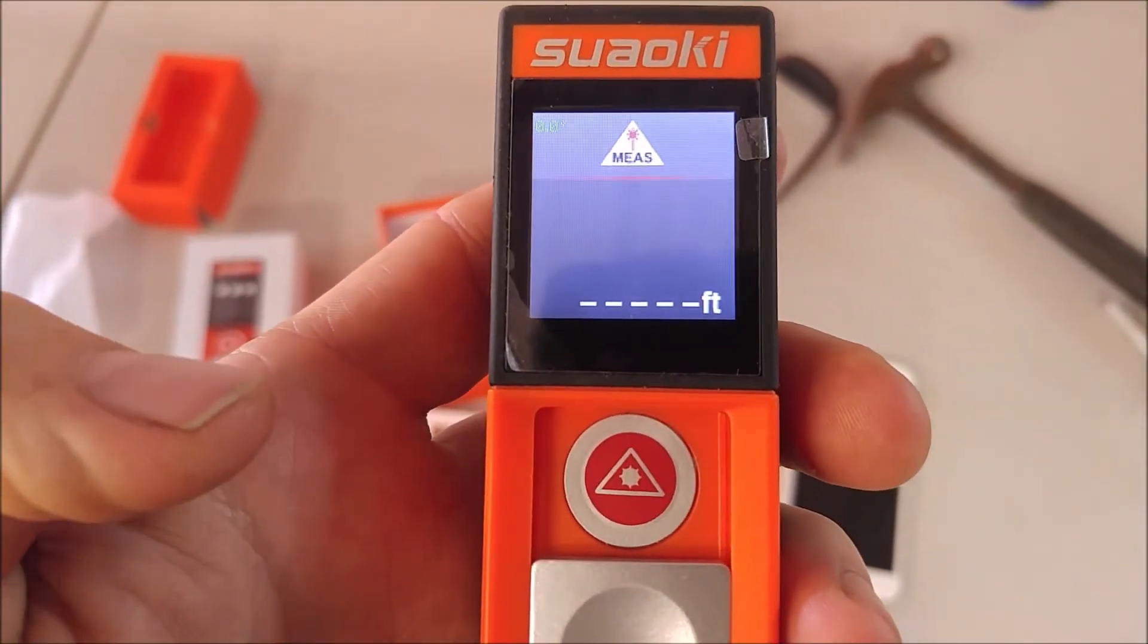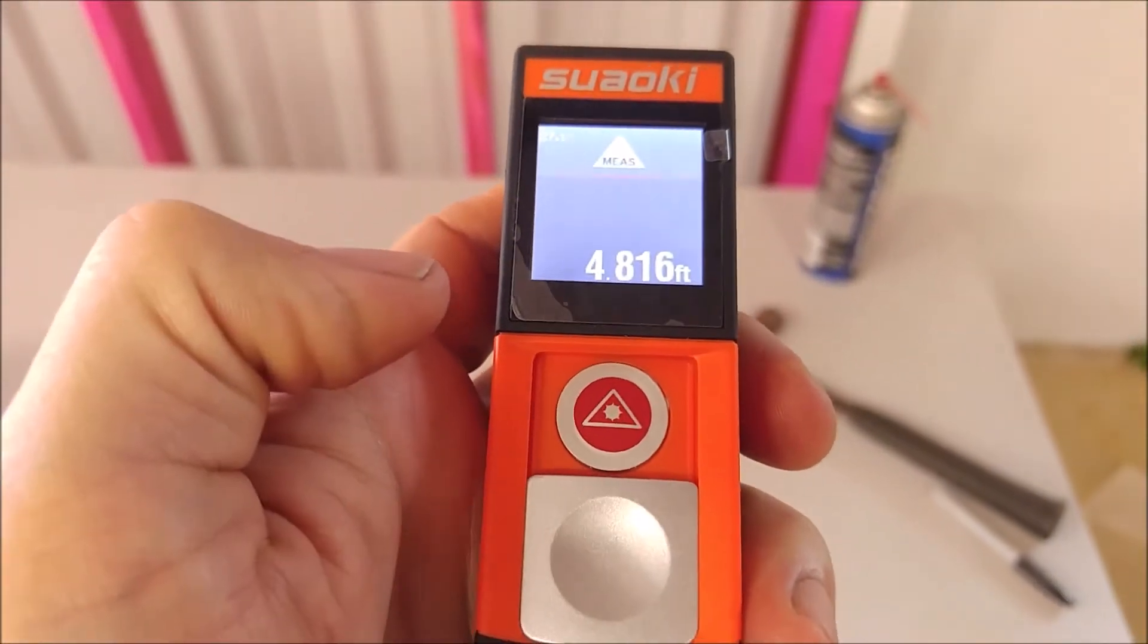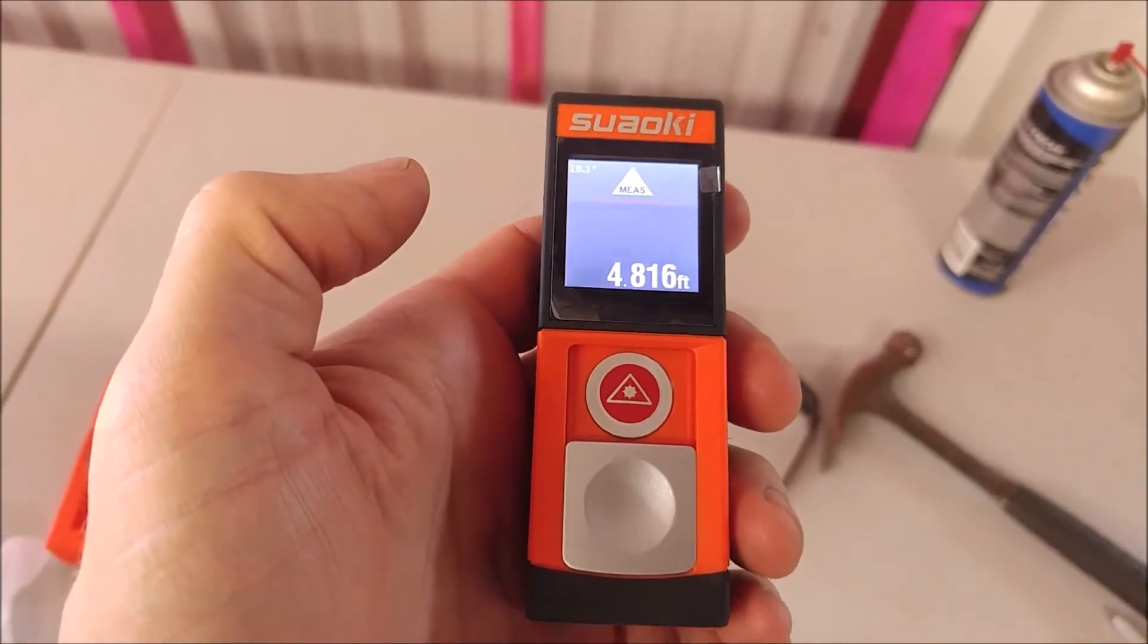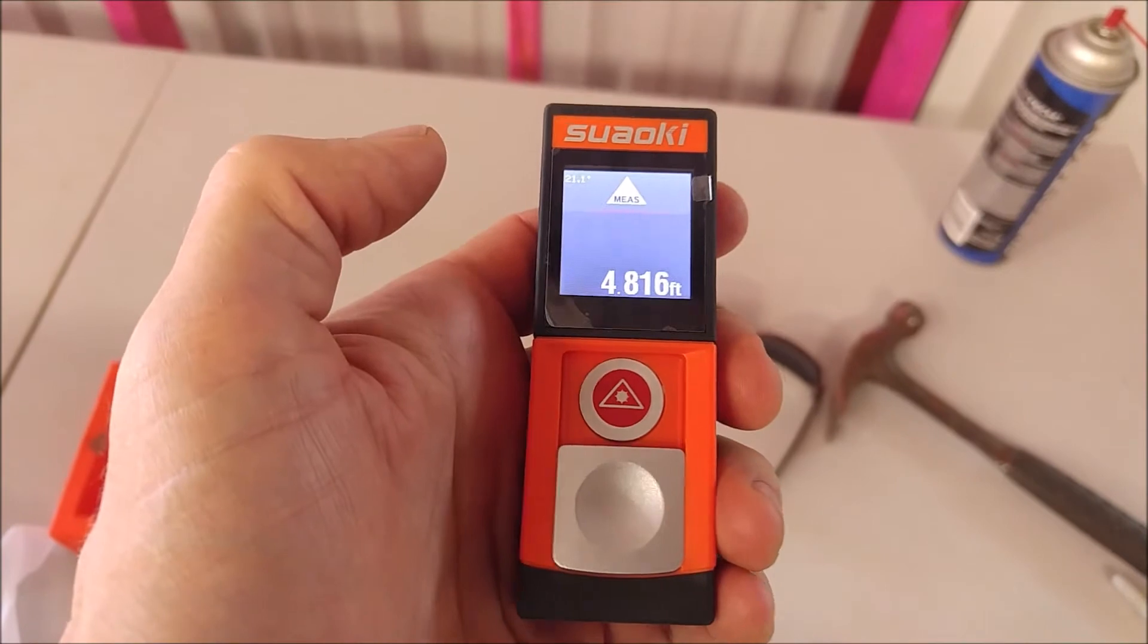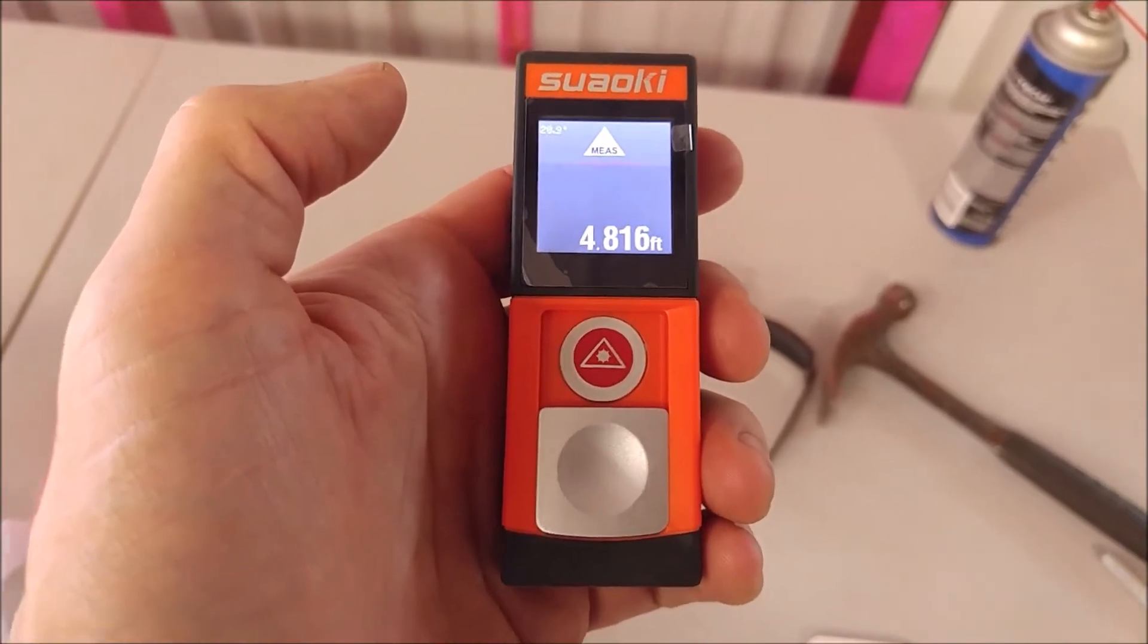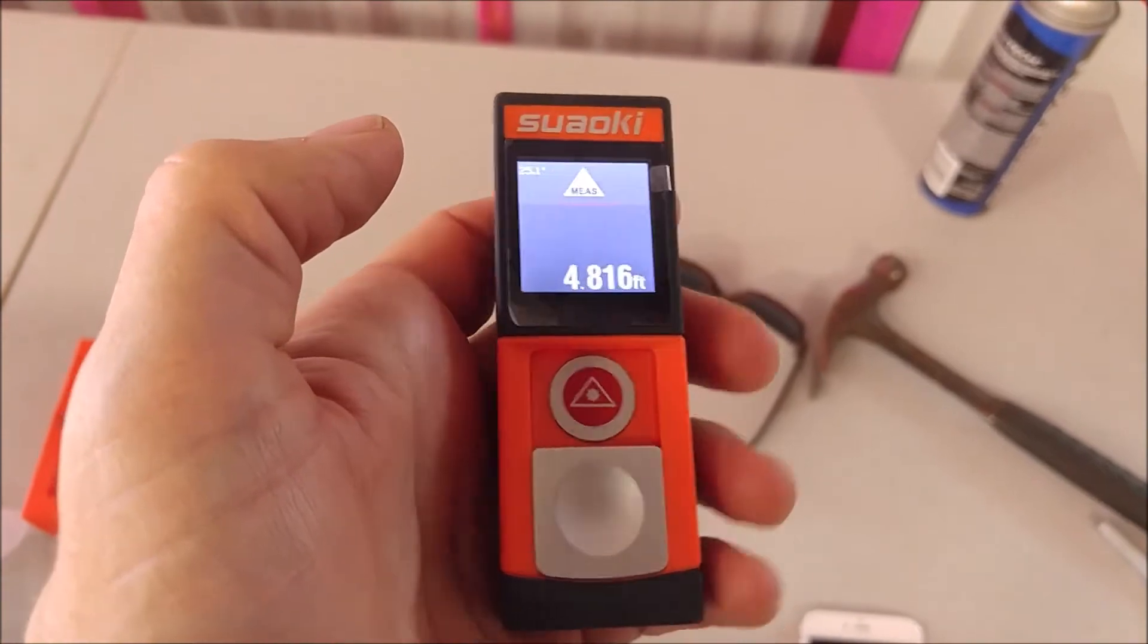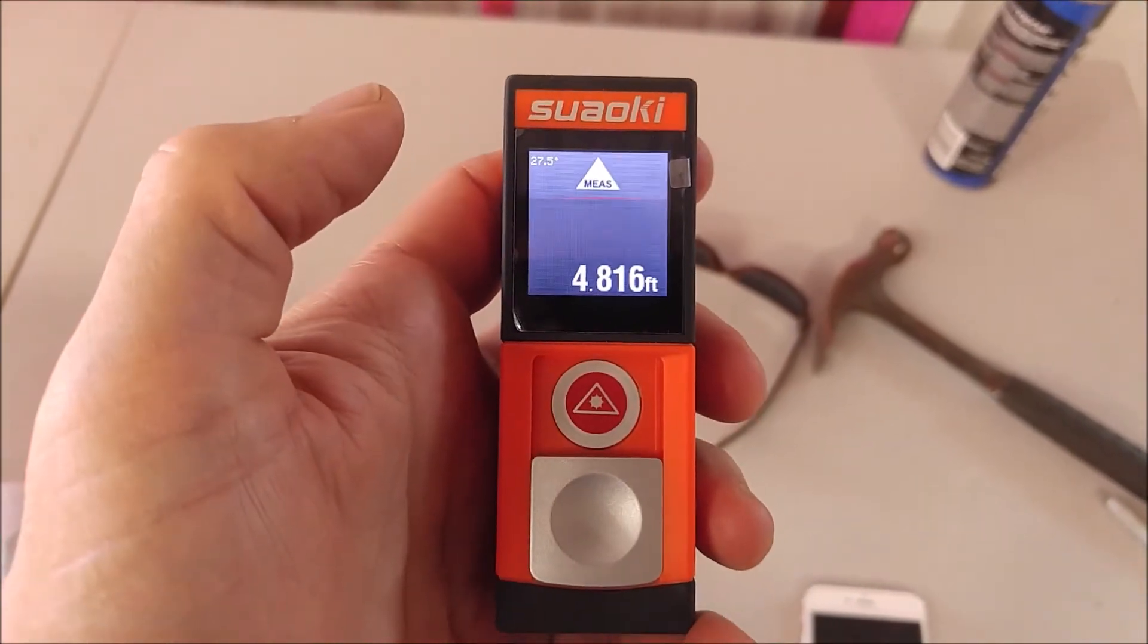As soon as you turn it on you get a little guy wave at you and it's instantly ready to go. So you just point and press the button and it tells you instantly how far away it is. I tested this measuring a room that is about 17 feet and it was accurate to within about a sixteenth of an inch. Pretty impressive there.